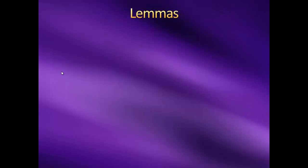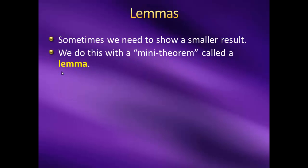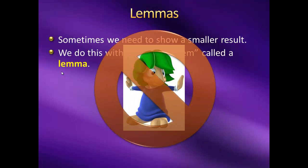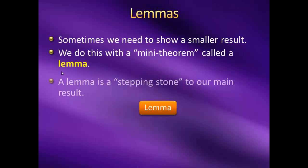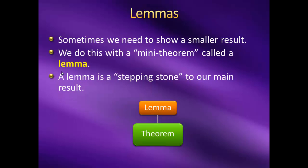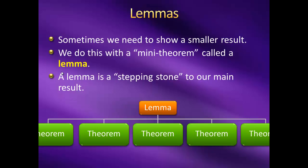Now in some cases, the thing we want to prove relies on some smaller result that we haven't proven yet. What we do in such a case is we first prove this smaller result, sort of a mini-theorem, which we call a lemma, which is of course not to be confused with lemmings. A lemma serves as a stepping stone to our main result. Keep in mind, whether something is considered a lemma or a full theorem in its own right is only a matter of how it's intended to be used. Otherwise, there's no true distinction. Also, just because something is a lemma doesn't mean it's not important. Some of the most important results in mathematics are known as lemma, because they've been particularly useful stepping stones that lead to great results.